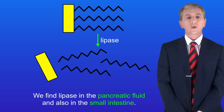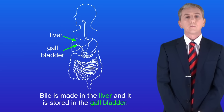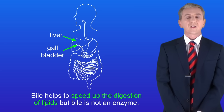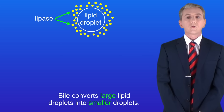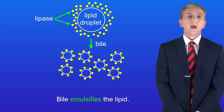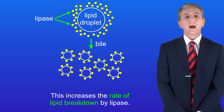The digestion of lipids also involves bile, so we're going to finish by looking at that. Bile is made in the liver and stored in the gallbladder. Bile helps to speed up the digestion of lipids, but bile is not an enzyme. Bile converts large lipid droplets into smaller droplets — scientists say that bile emulsifies the lipid. This massively increases the surface area of the lipid droplets, which increases the rate of lipid breakdown by lipase.